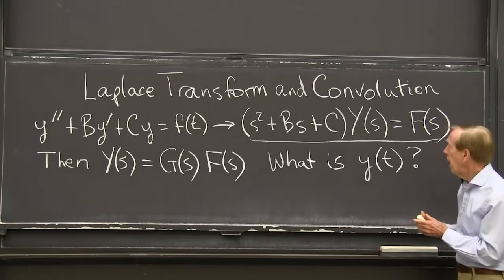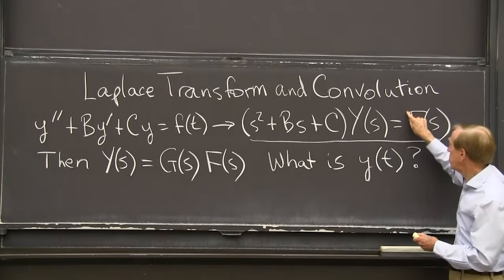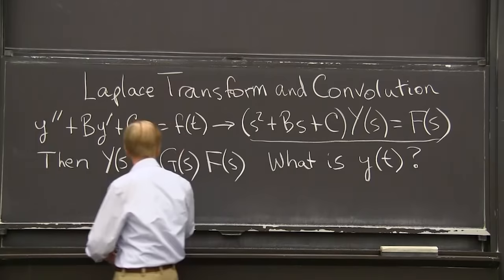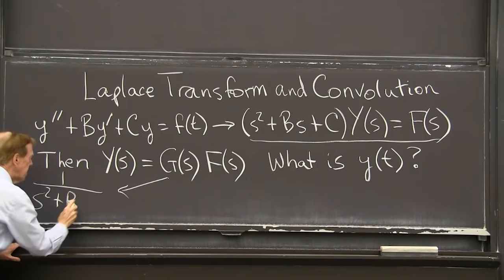No problem. OK, now I'll divide by that. So I move that as 1 over. And I call it g. So this g is 1 over s squared plus Bs plus C.